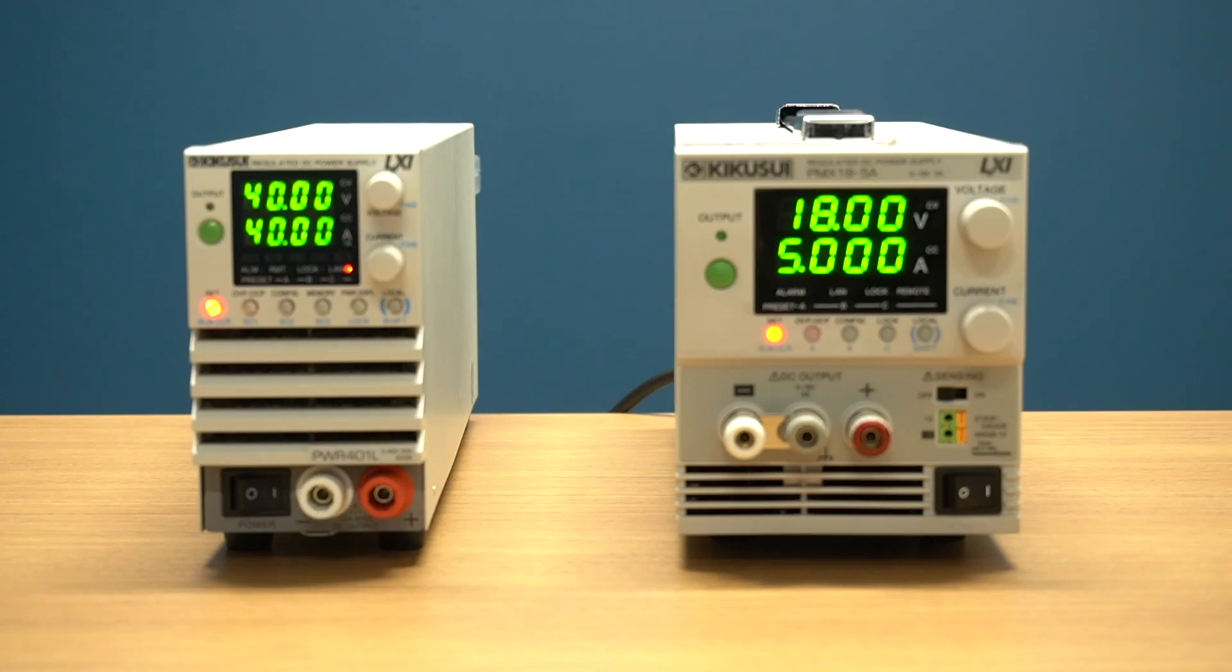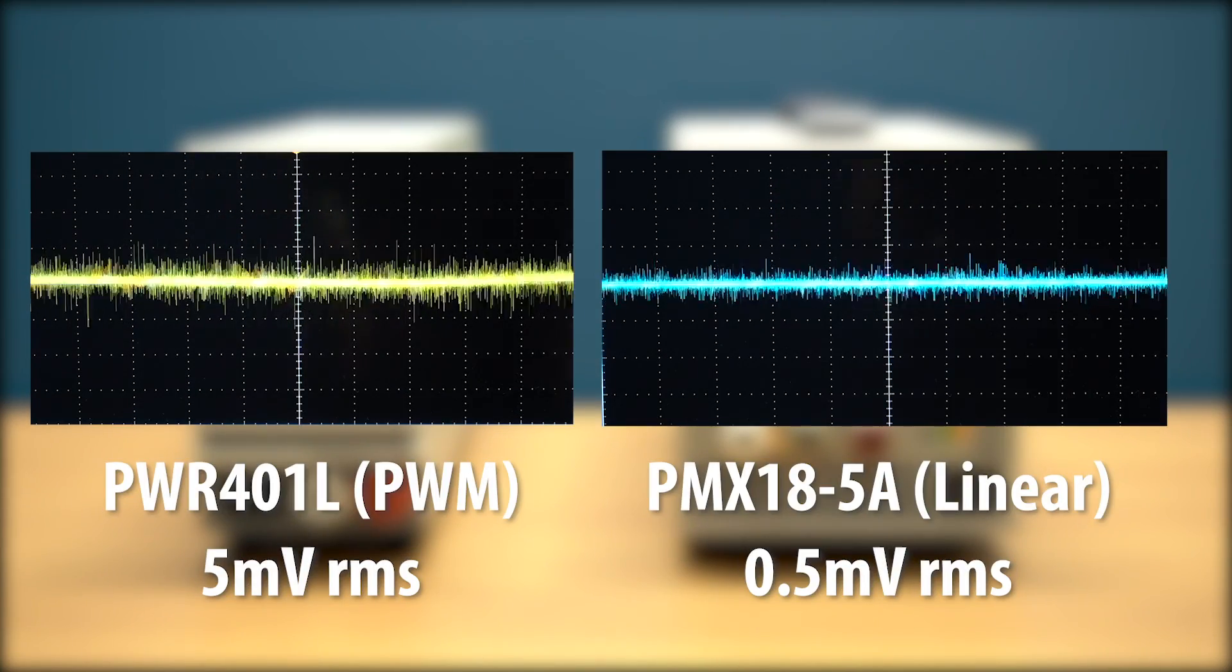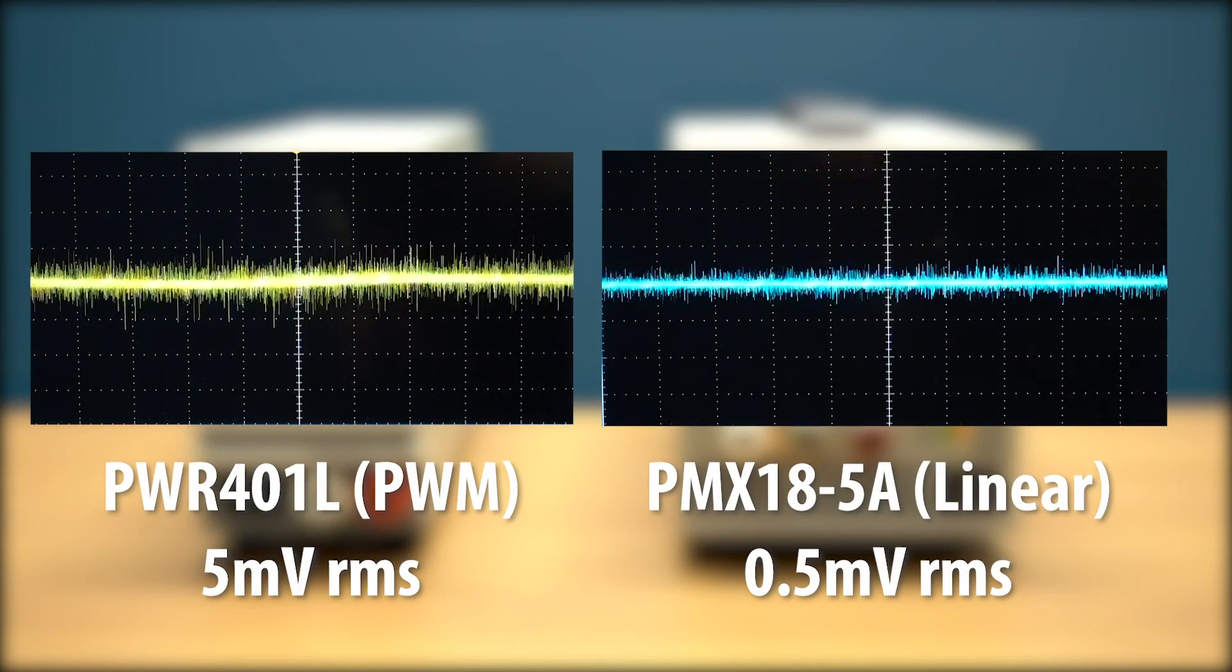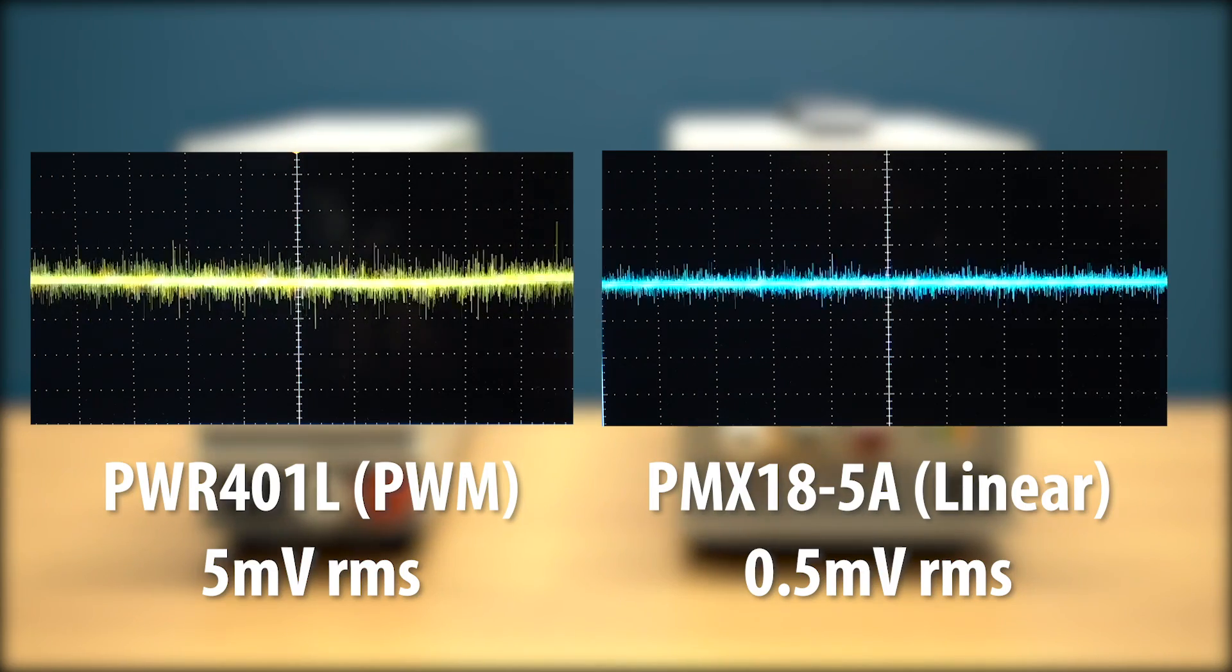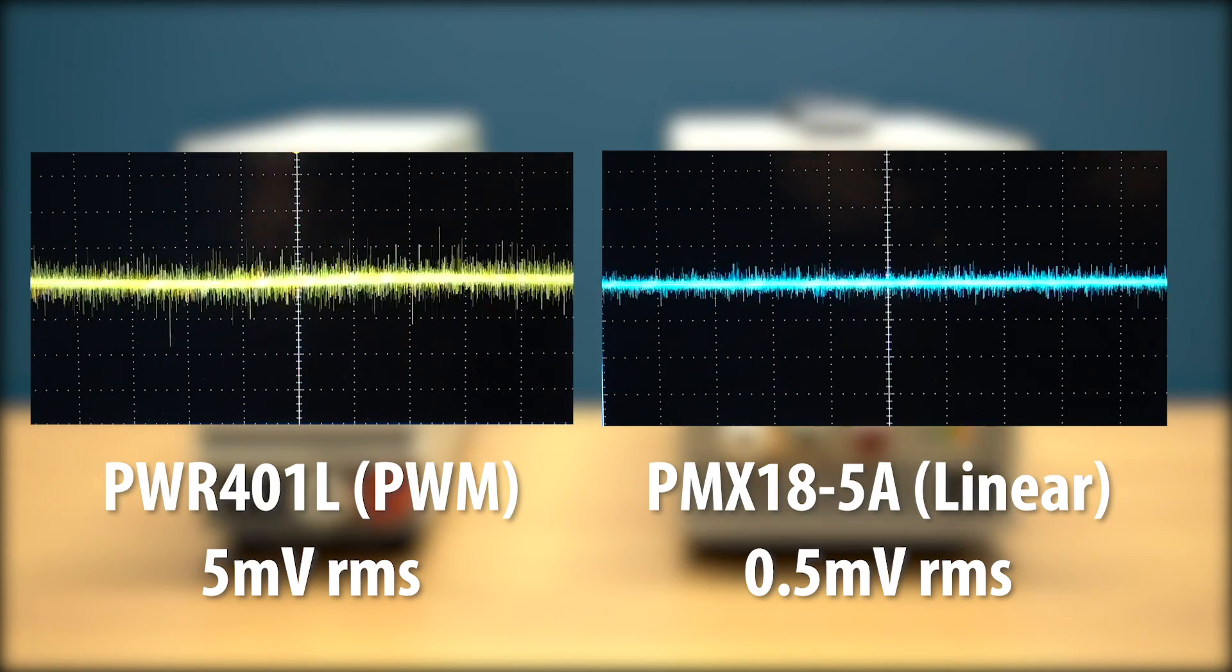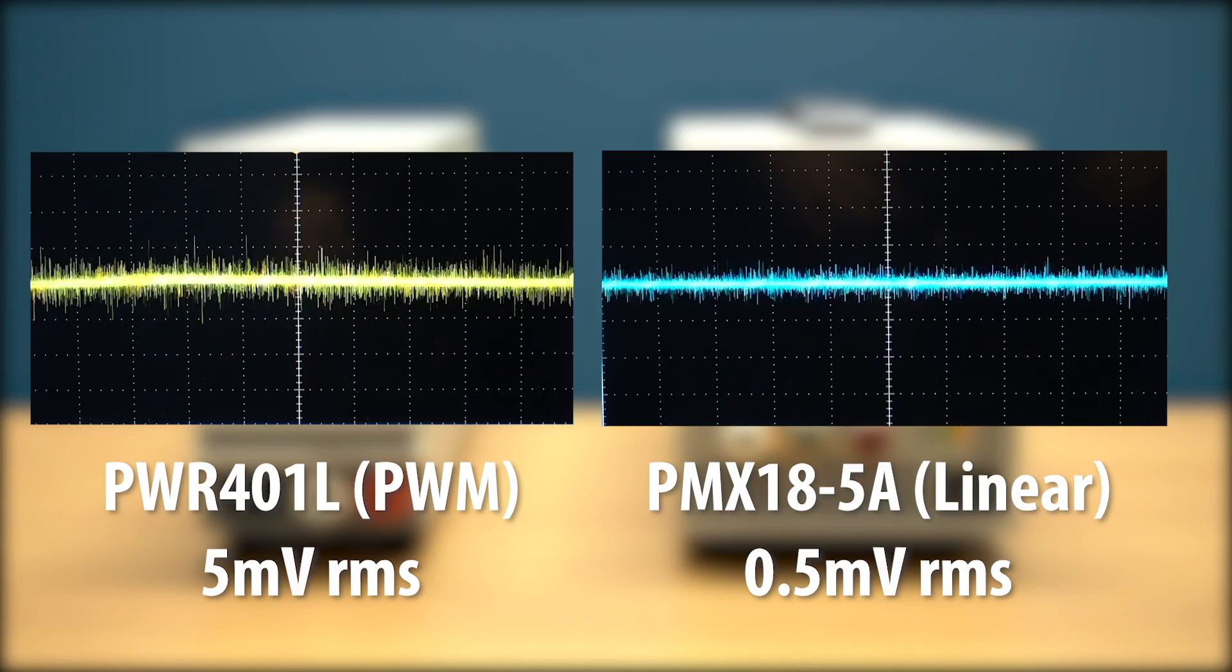However, there are other clear advantages when using a linear power supply, like the PMXA. In addition to increased reliability, a linear power supply is virtually immune to noise and electromagnetic interference, making it perfect for sensitive DUTs like medical equipment and low noise amplifiers.